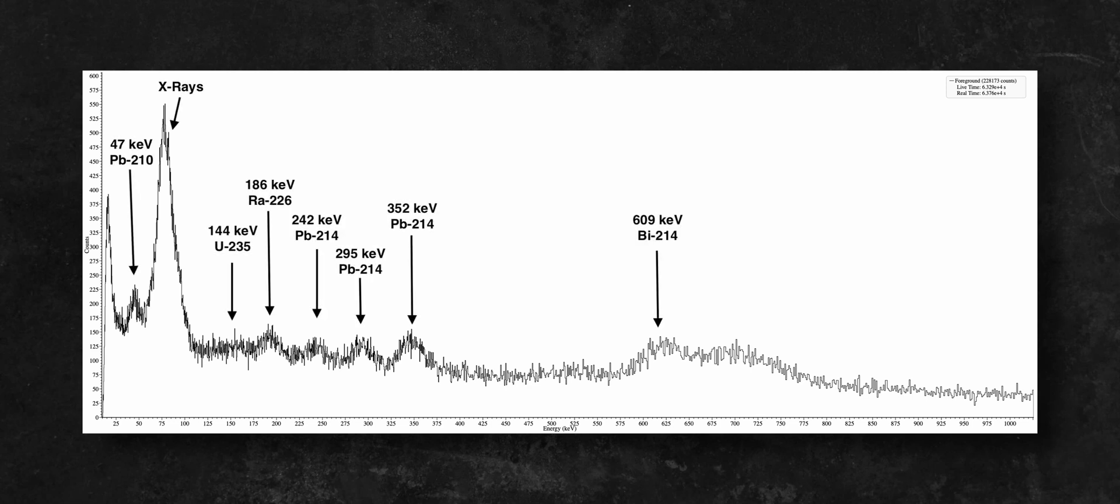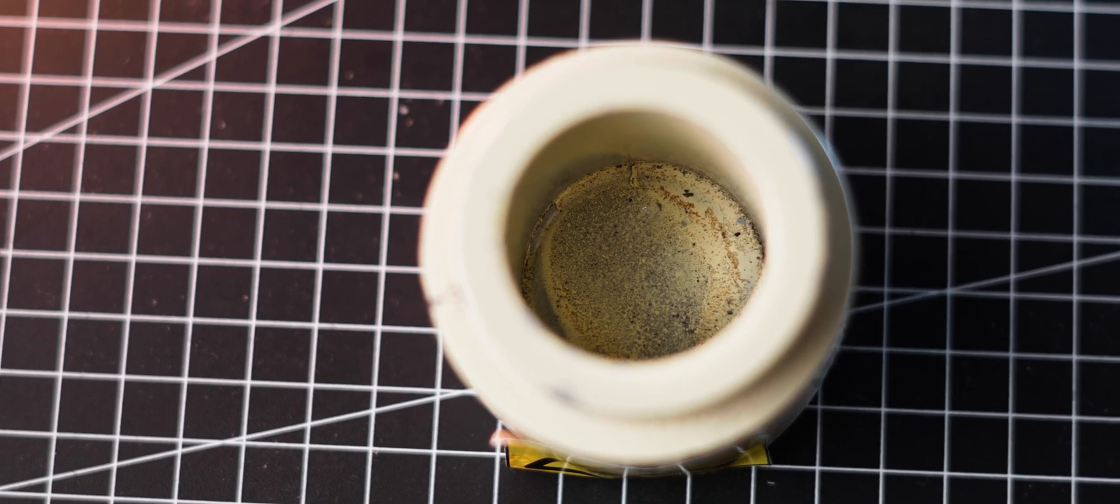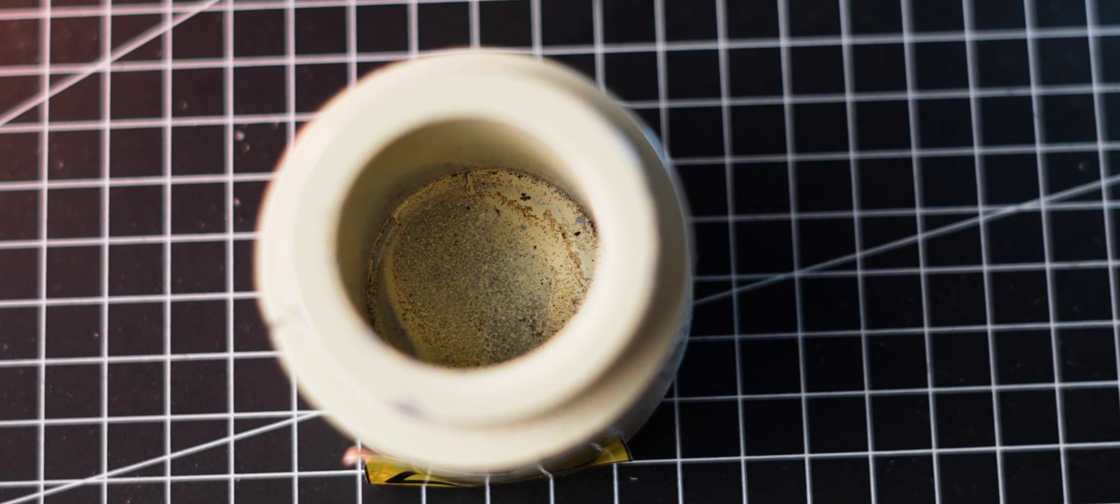The gamma spectroscopy revealed peaks that are characteristic for uranium ore. I spoke with the previous owner and he did mention that he stored uranium ore inside, so there's definitely a big chance that a small piece of the mineral broke off and now sits at the bottom of the container.